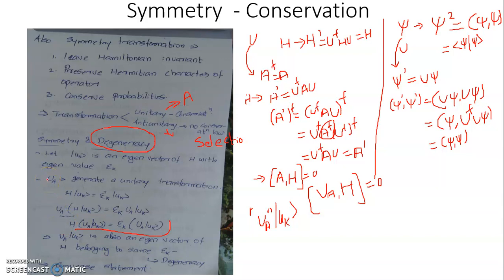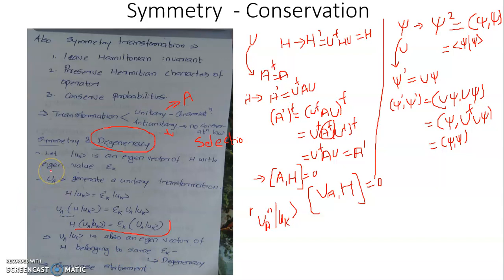So we have started from the presence of a symmetry transformation for the Hamiltonian and arrived at the concept that there will be degenerate eigenvectors for the Hamiltonian. But practically, we encounter degeneracy rather than encountering a symmetry operator or unitary operator directly. So conversely, once we find there is a degeneracy in a system under study, then definitely there is scope for the presence of a unitary operator U_A that accounts for a symmetry transformation for the system, so that U_A will have a Hermitian operator A acting as its generator, which will then be a constant of motion.